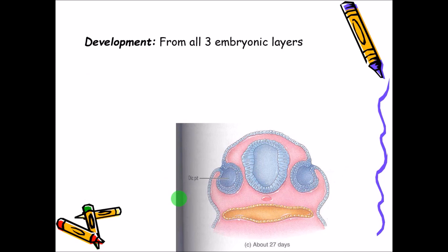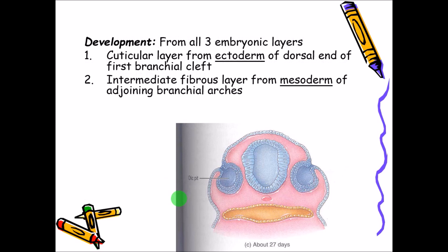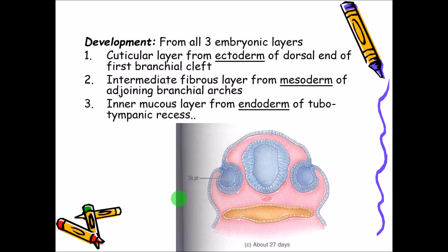The tympanic membrane develops from all three embryonic layers. The cuticular layer develops from the ectoderm of the dorsal end of the first branchial cleft; the intermediate fibrous layer from the mesoderm of the adjoining branchial arches; and the inner mucosal layer from the endoderm of the tubotympanic recess. All three germ layers — ectoderm, mesoderm, and endoderm — come together in the tympanic membrane.